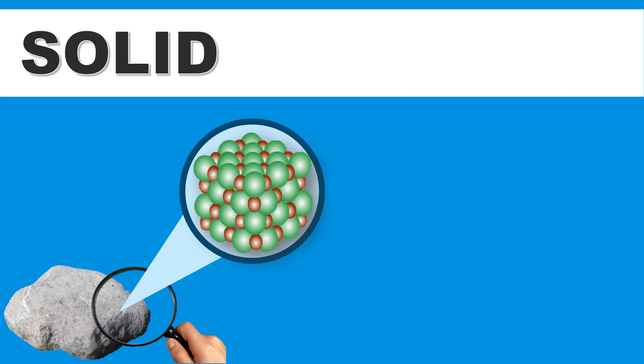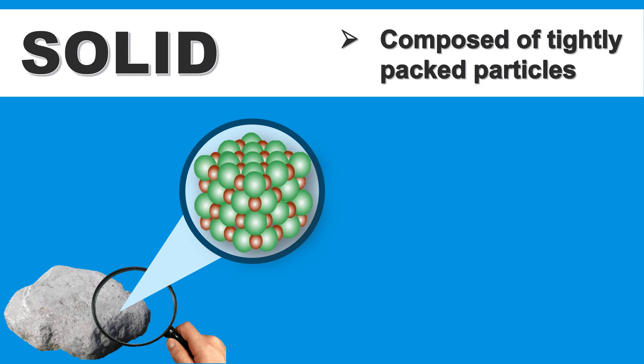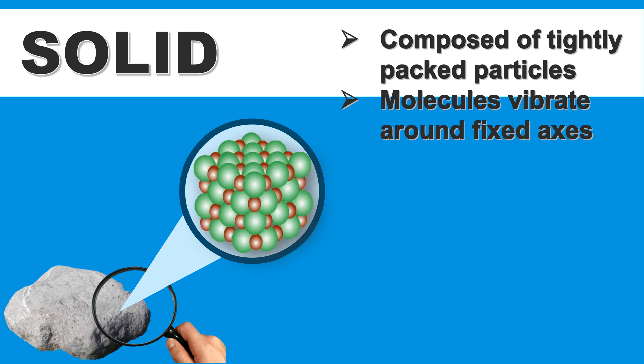Let's talk about solid. A rock is an example of a solid. Solid is composed of tightly packed particles. It means that the molecules in solid are packed closely together. Molecules vibrate around a fixed axis. The force that holds the molecules of solid is very strong. That's the reason why it has a definite shape.